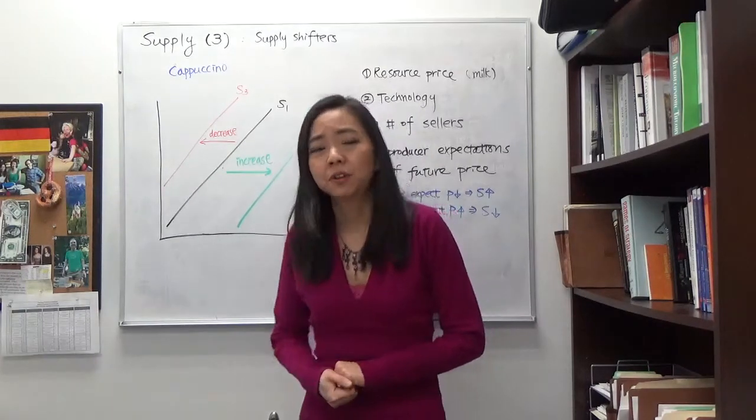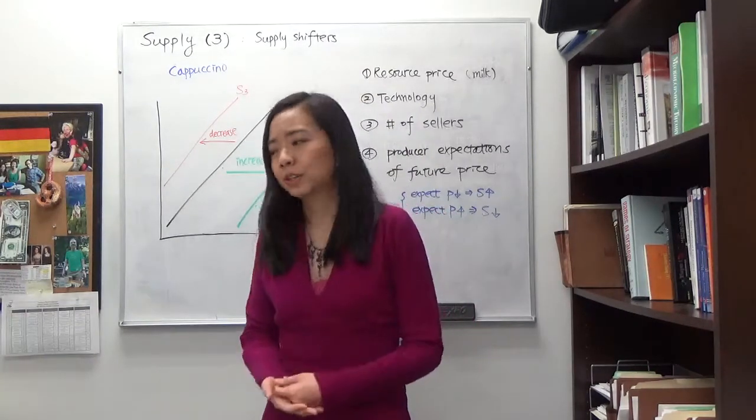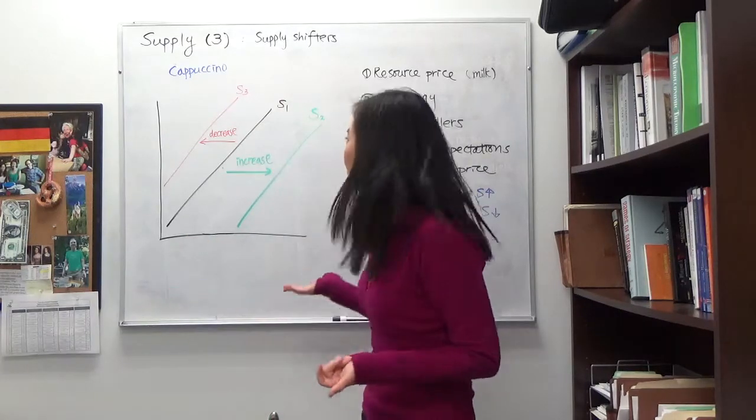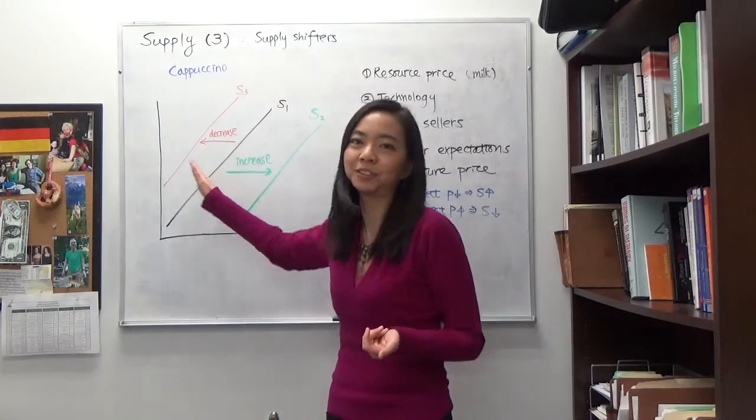And by contrast, if people are leaving Franz town, in particular if there are fewer sellers of cappuccino, that will shift our supply curve to the left.